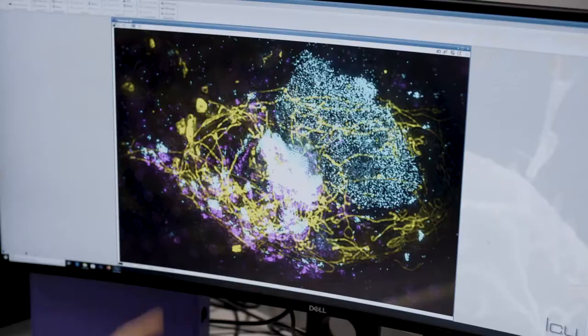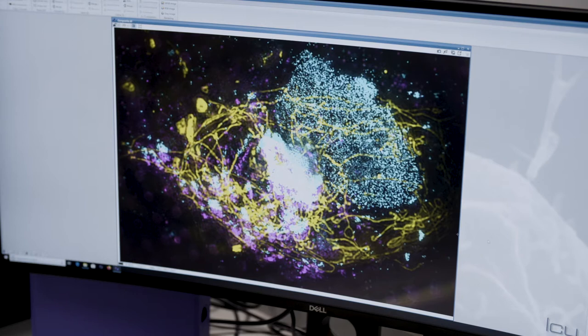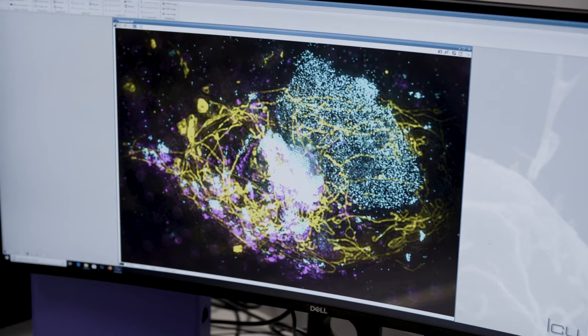The next thing we do is image them on two different microscopes. The first thing we do is image them on the cryosim, which produces this image. And then secondly, we image them on the x-ray microscope, which allows us to view the general landscape of the cell.